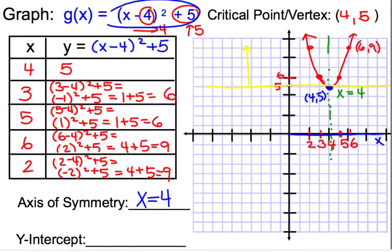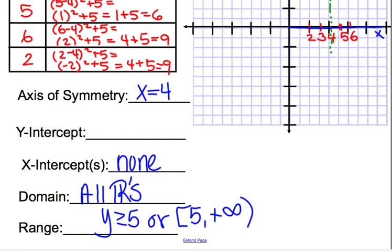Now we have one thing left. We want to find the y-intercept. Where does it touch on the y-axis? So we know it's something above ten here. So I'm going to go ahead and just rewrite this equation that we have. g of x equals x minus four all squared plus five.